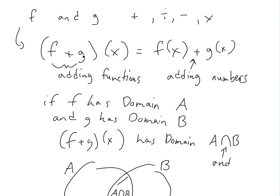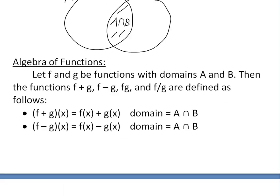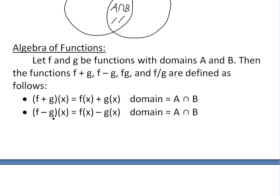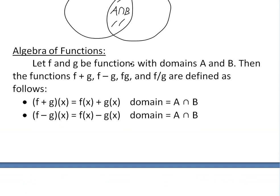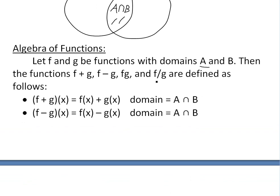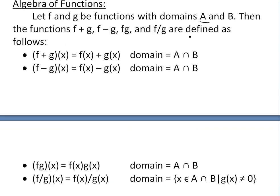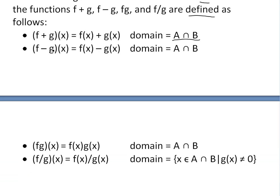Once we have this set up, here's the general algebra of functions for division, multiplication, subtraction, and addition. Let f and g be functions with domain A and B. Then (f+g)(x) = f(x) + g(x), with domain A intersect B. And the same applies to (f−g)(x) — it has to be in the domain true for both, so domain is also A intersect B.